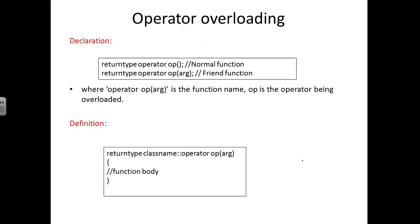Now let's see the syntax for operator overloading. The syntax is: return type, then the keyword operator, followed by OP which represents the operator we are going to overload. You would have already studied different operators such as addition and subtraction in arithmetic operations from C programming or Python. This type of declaration is called a normal operator function declaration.